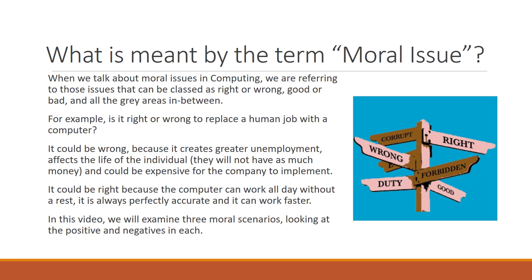For example, is it right or wrong to replace a human job with a computer? You could argue it could be wrong, because it creates greater unemployment, it will affect the life of the individual — they will not have as much money — and it could be expensive for the company to implement a more expensive system. On the other hand, it could be argued that this could be right, because the computer can work all day without a rest, it is perfectly accurate, and it can work faster.